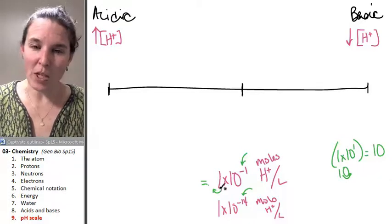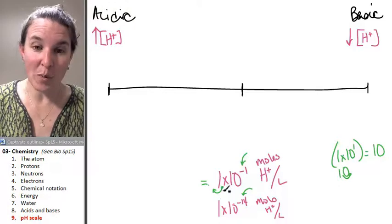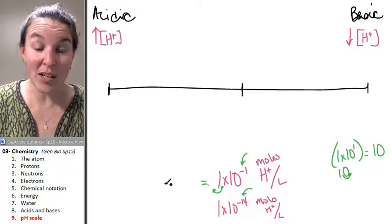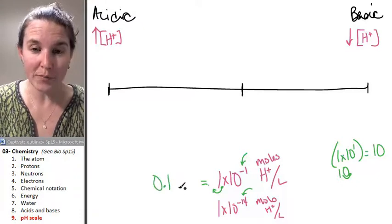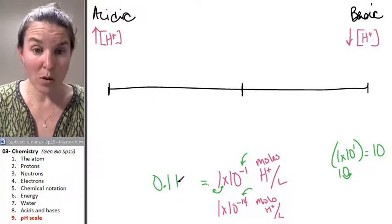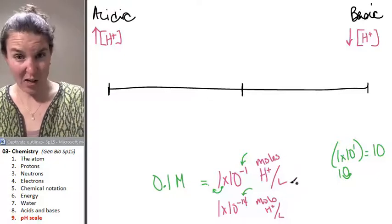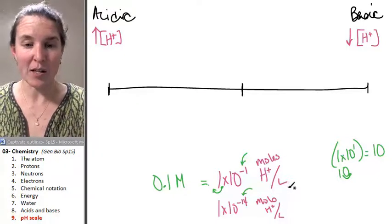So, if we're going to go to the other direction, we have to move our decimal point one place over. So, this is actually going to be 0.1 moles or molar of hydrogen ions per liter. That's my concentration.